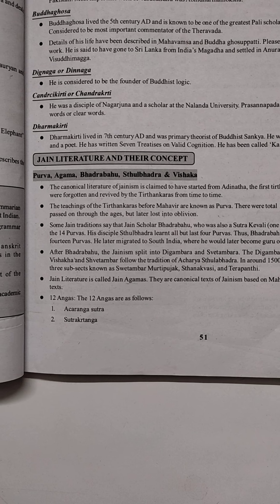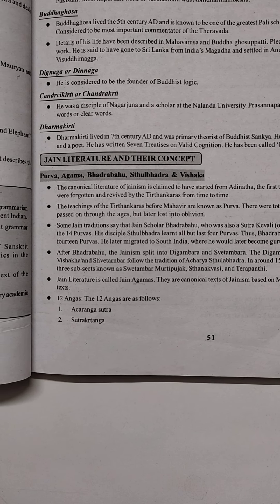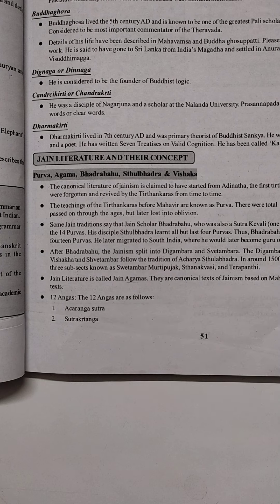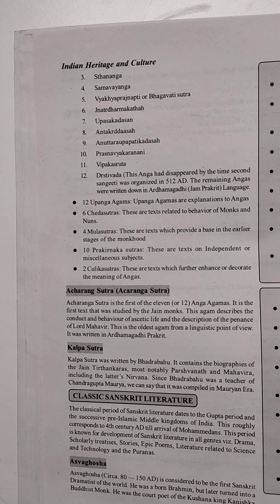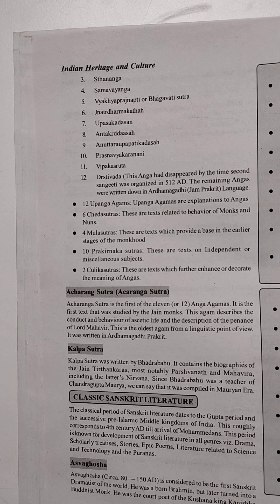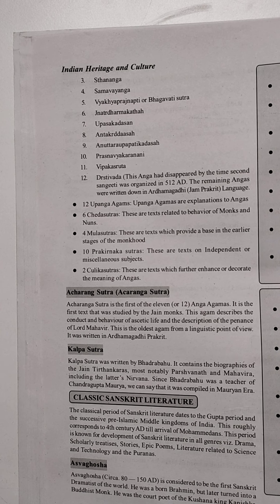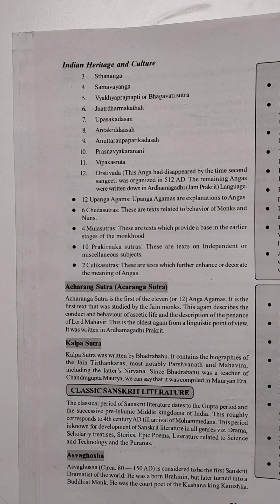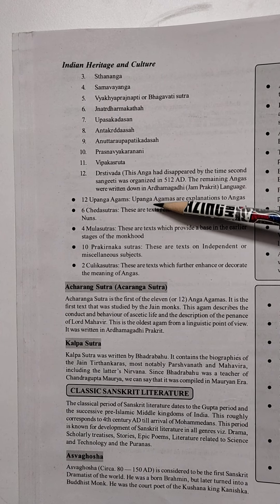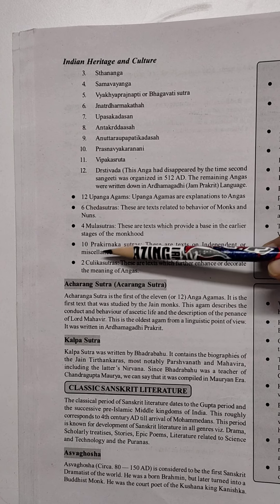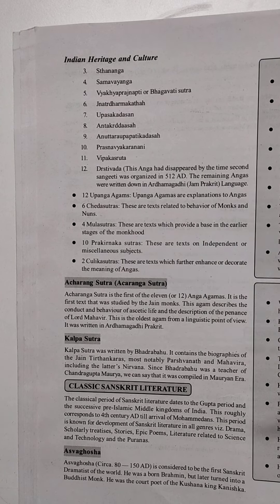The 12 Agams are as follows. The categories include: Upang Agam (12), Chet Sutra (4), Mul Sutra (4), Prakirna (10), Prakirna Karan, and Chulika Sutra (2).